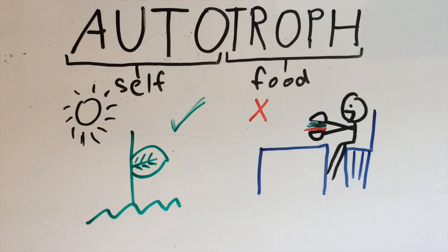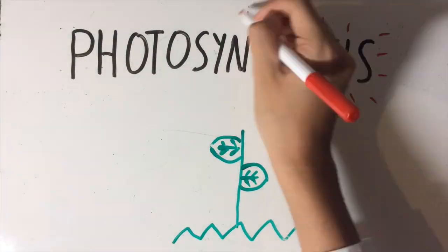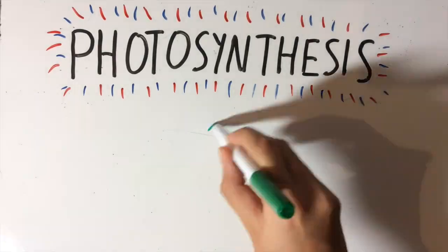We're going to focus on autotrophs and how they make their own food. So how do plants make their own food? A process called photosynthesis. All the work of photosynthesis is divided into two stages. The first stage.